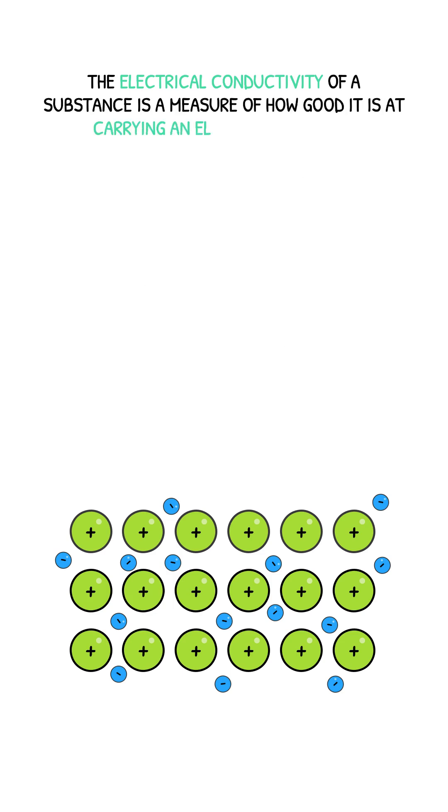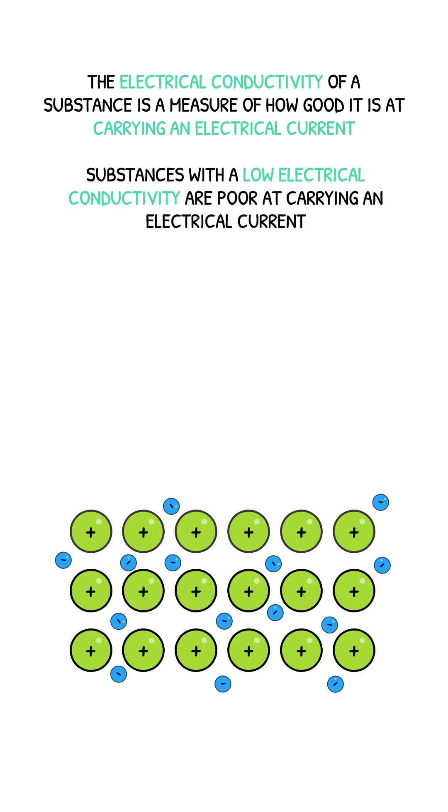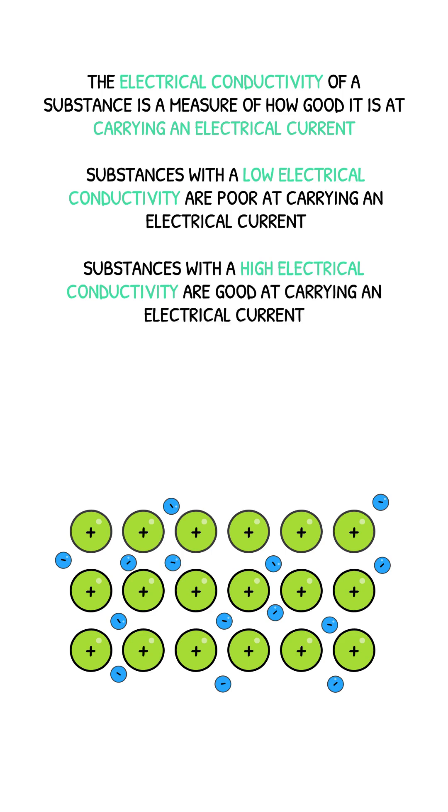The electrical conductivity of a substance is the measure of how good it is at carrying an electrical current. Substances with a low electrical conductivity are poor at carrying an electrical current, and substances with a high electrical conductivity are very good at carrying an electrical current.